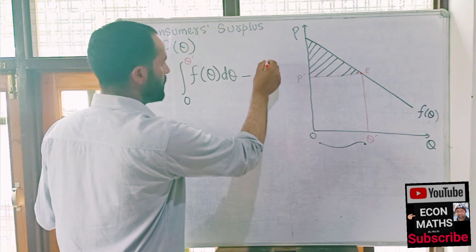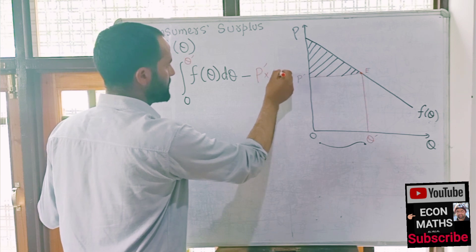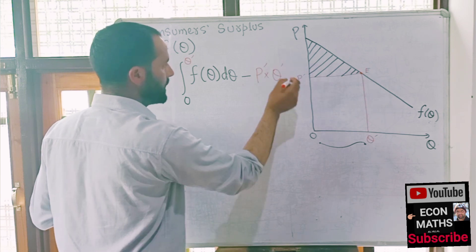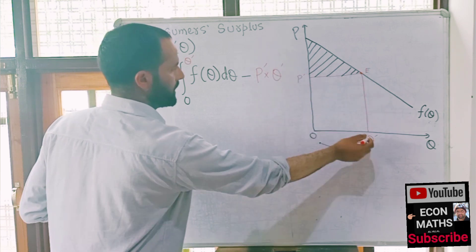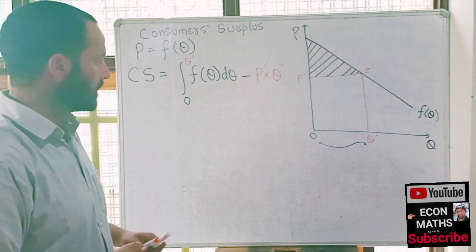And we subtract from it P' times Q', which represents the total expenditure that the consumers actually make at the equilibrium price.